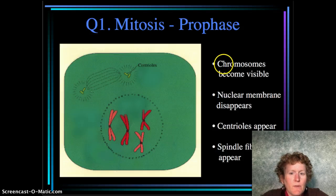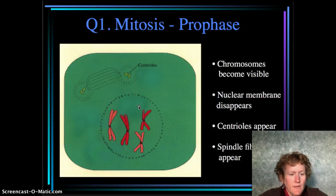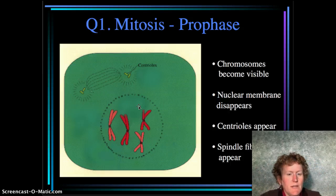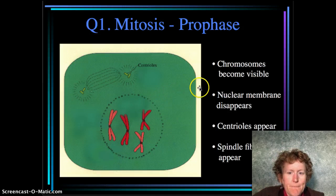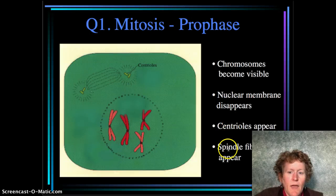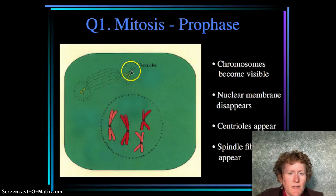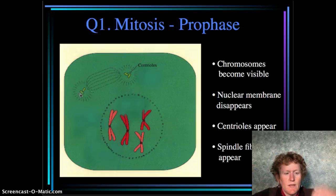Prophase is where the chromosomes become visible inside the cell. They wrap themselves up in tighter and tighter formation — the DNA wraps itself around proteins called histones. The nuclear membrane disappears, the centrioles appear, and the spindle fibers appear. The centrioles are kind of like the poles; they anchor each end of the cell.